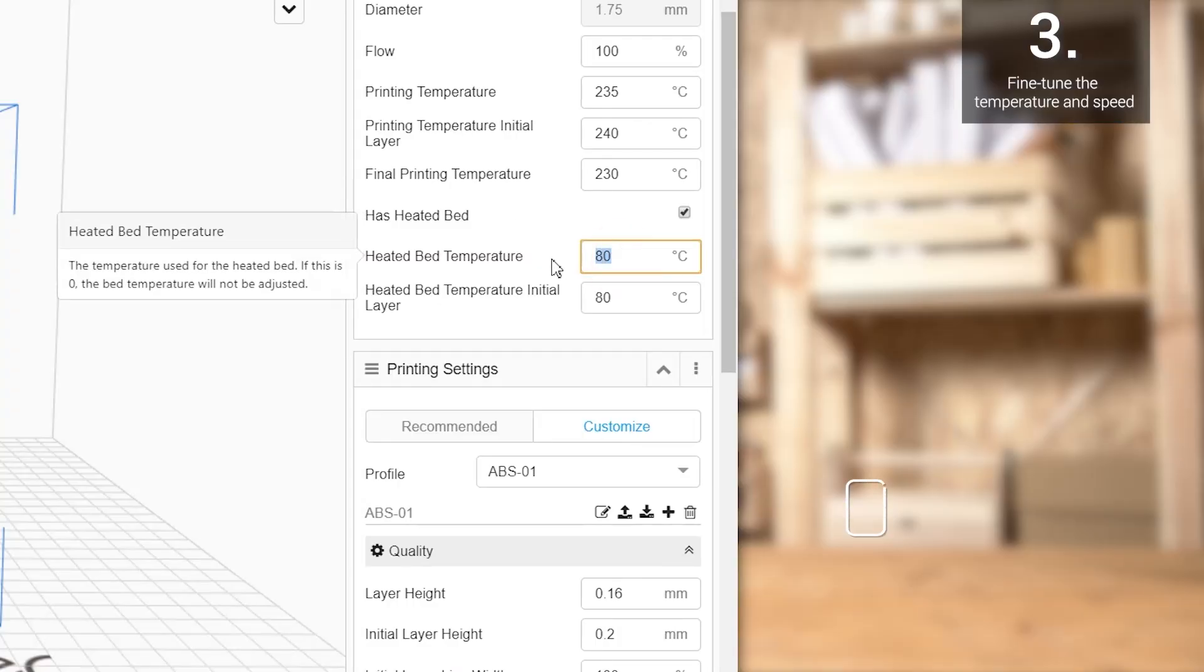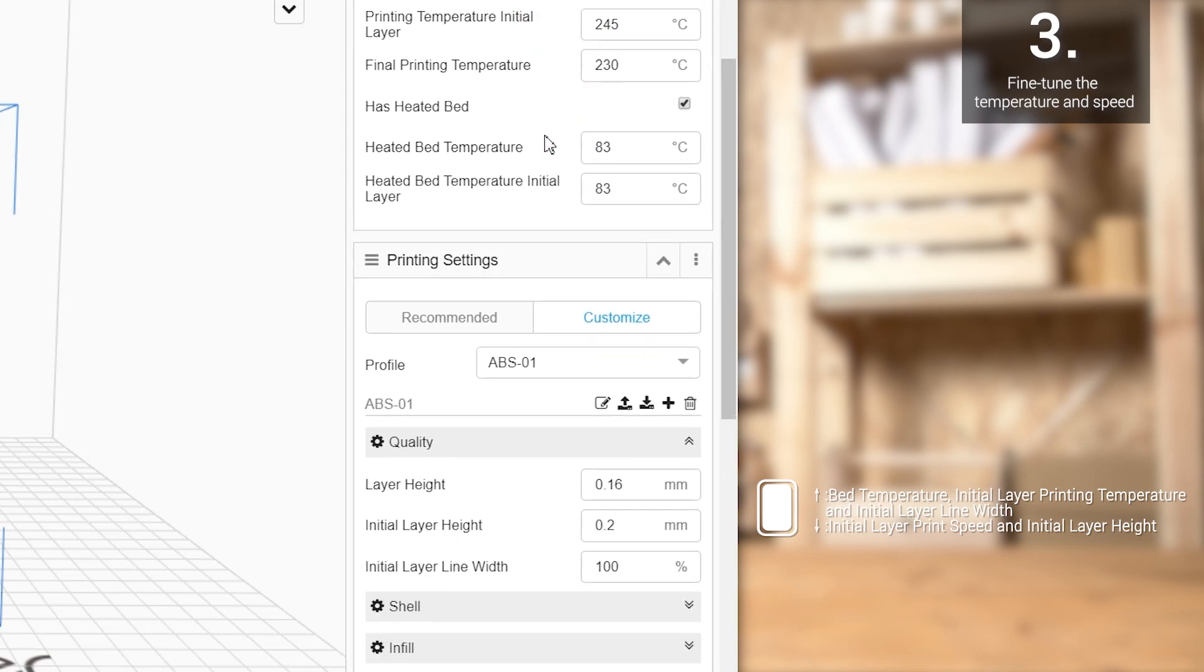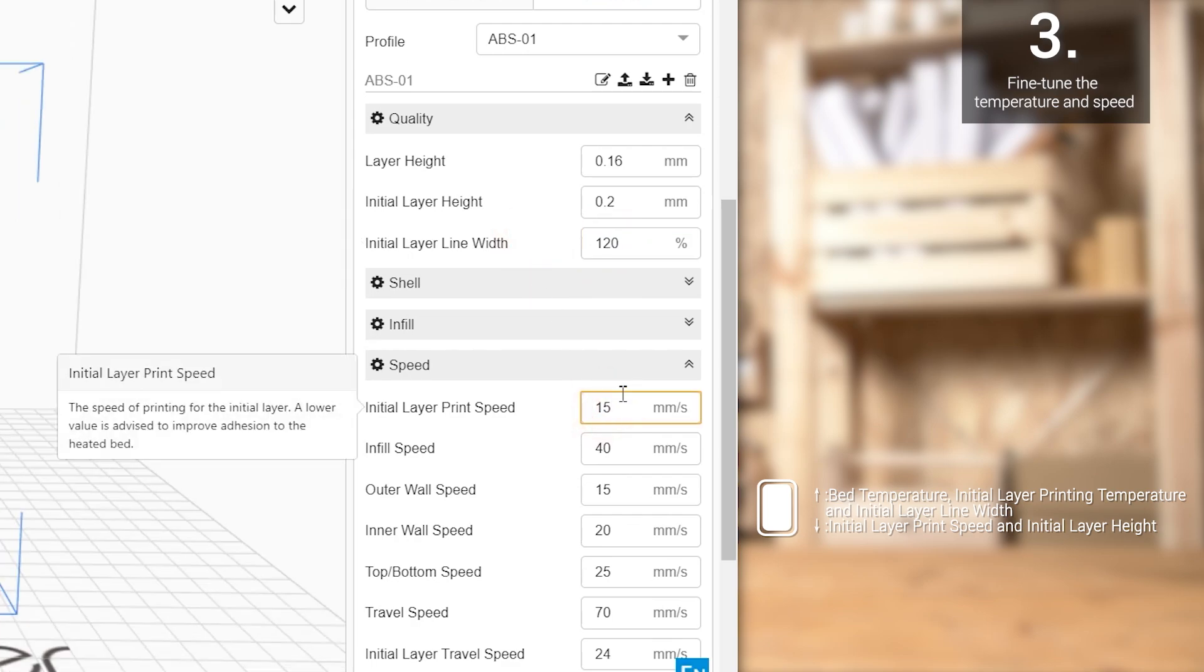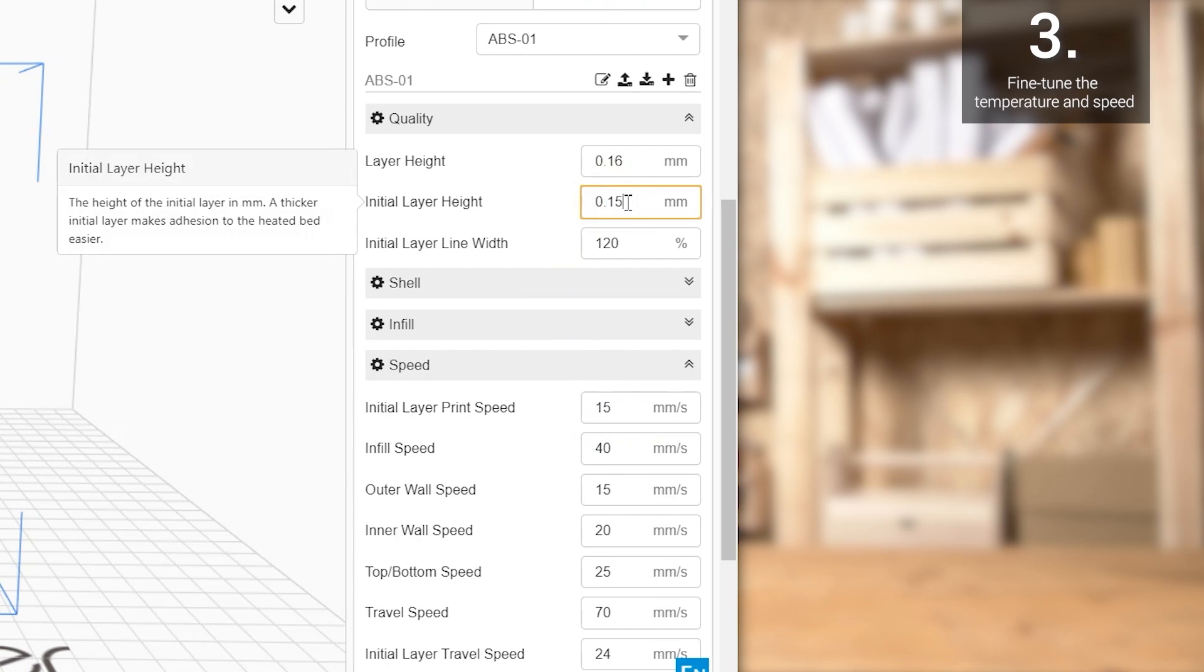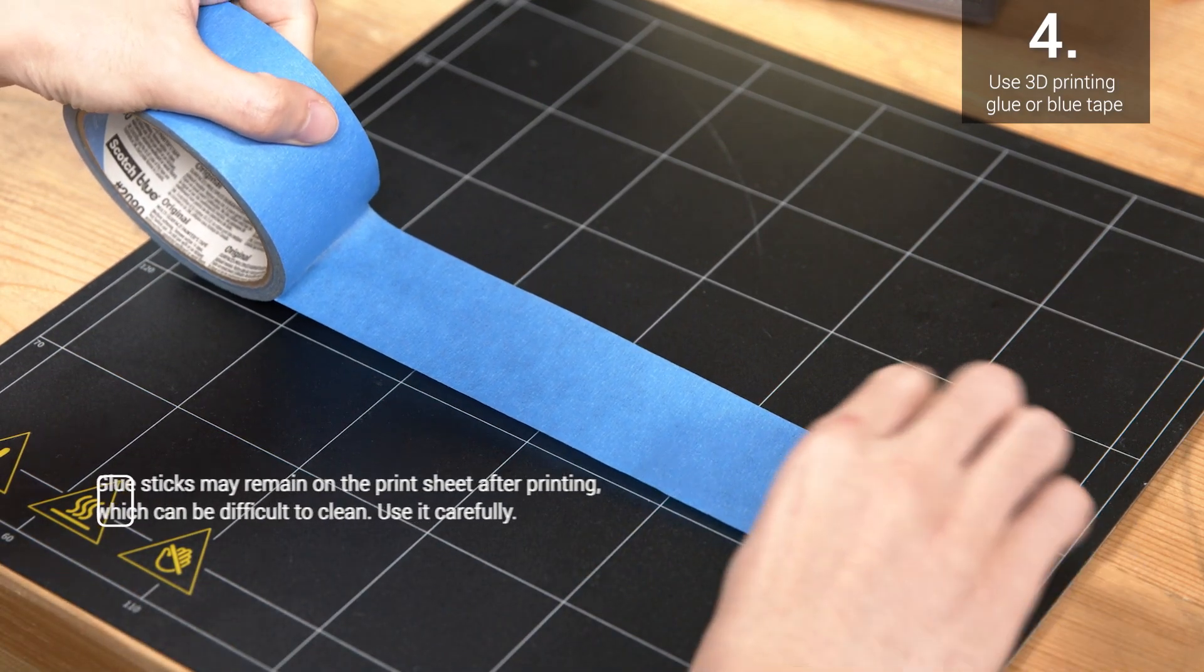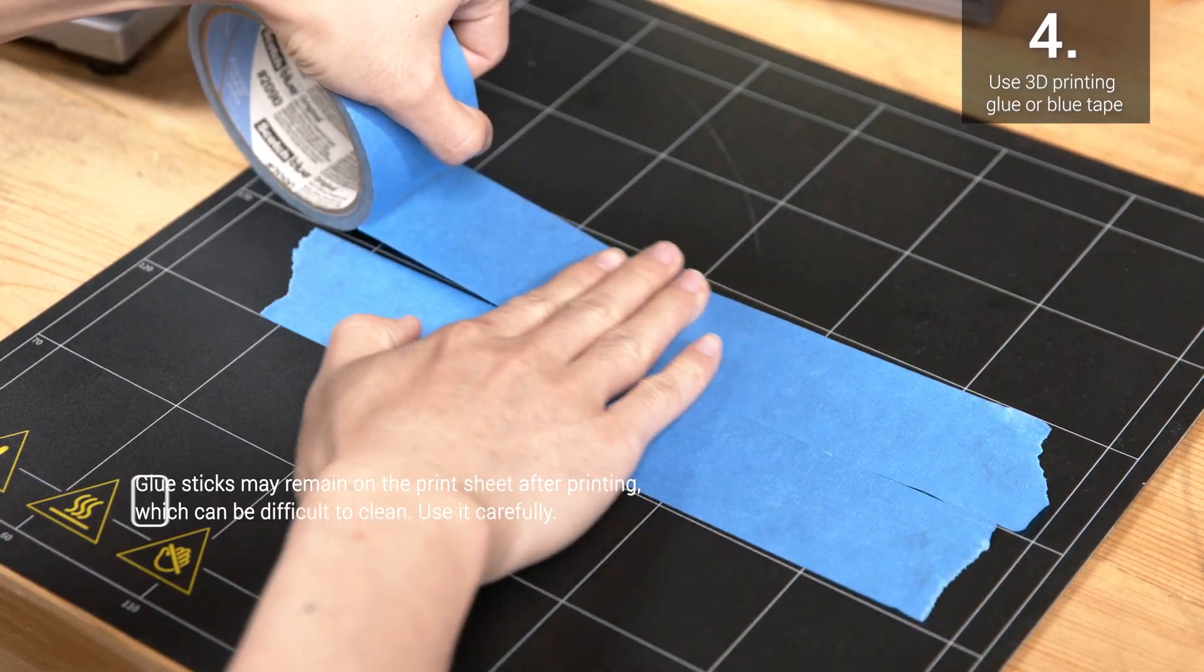Third, fine-tune the temperature and speed parameters to achieve a better first layer adhesion. This includes turning up the bed temperature, initial layer printing temperature, and initial layer line width, as well as turning down the initial layer print speed and initial layer height. Fourth, apply some 3D printing glue or blue tape to your heated bed, and then print on them. They can help with adhesion too.